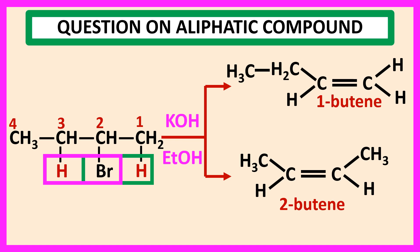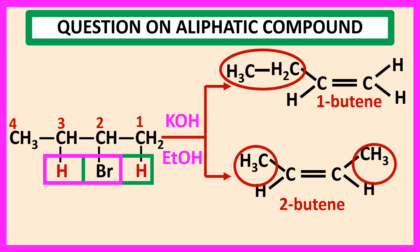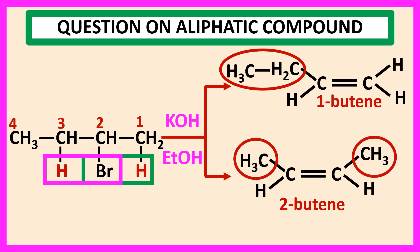1-butene contains one alkyl substituent group and 2-butene contains two alkyl substituent groups. So, 2-butene is produced in more amount. Thank you for watching this video.